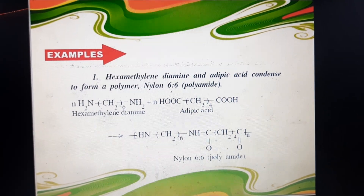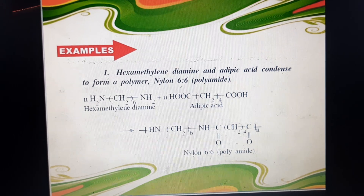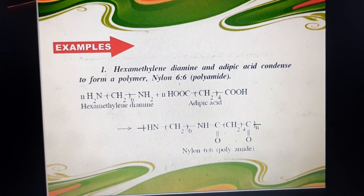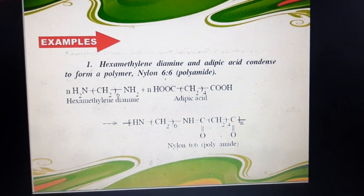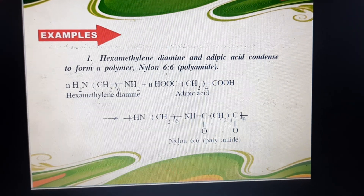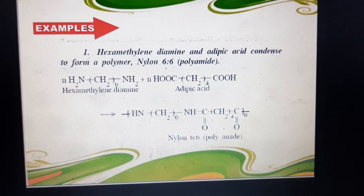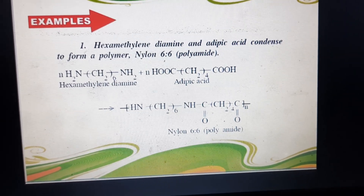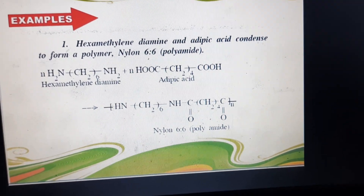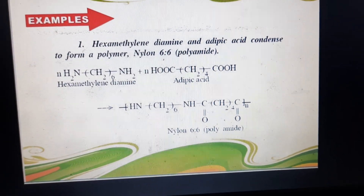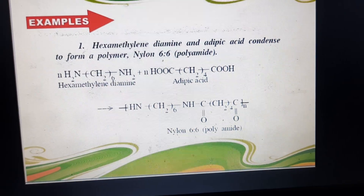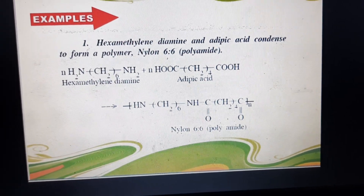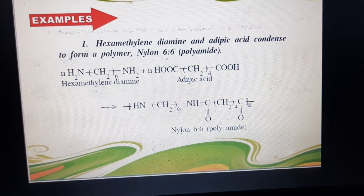Example: nylon 6,6. In condensation polymerization, hexamethylenediamine reacts with tetramethylene dicarboxylic acid (adipic acid) to form the nylon product. In this reaction, 2 moles of water are eliminated. This is called condensation polymerization. Remember the definition: the monomer is converted to polymer, a product is formed, and elimination occurs. Hexamethylenediamine and adipic acid produce the polymer nylon 6,6.